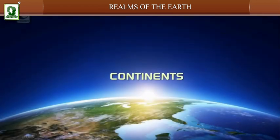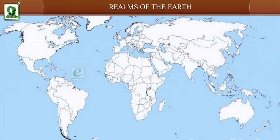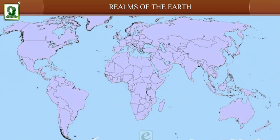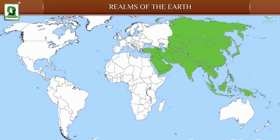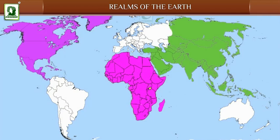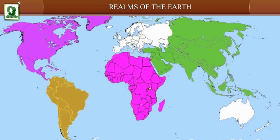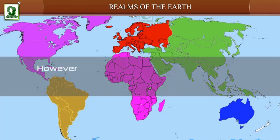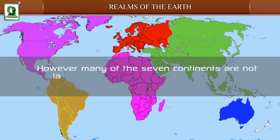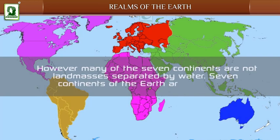Continents: Continents are large landmasses separated by expanses of water. Seven regions are recognized as continents: Asia, Africa, North America, South America, Antarctica, Europe, and Australia. Many of the seven continents are not strictly landmasses separated by water.